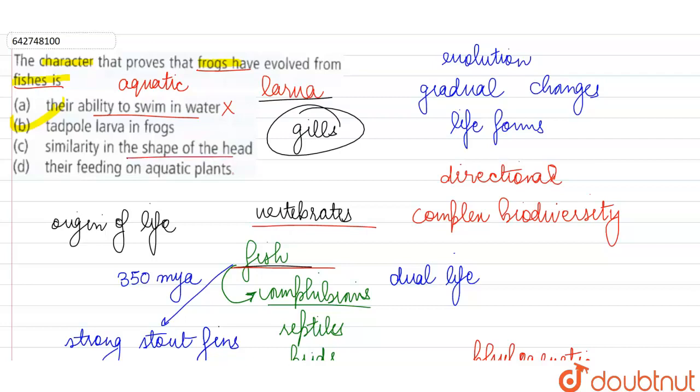Next they are saying similarity in shape of the head. So such similarity in the morphology again does not necessarily show that they have a close phylogenetic relationship.